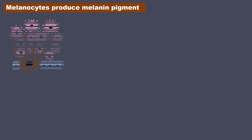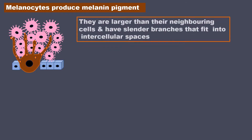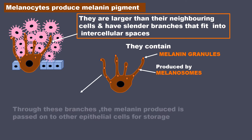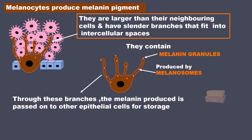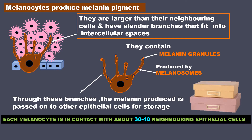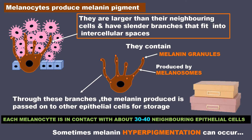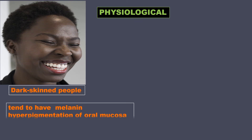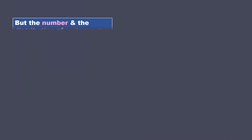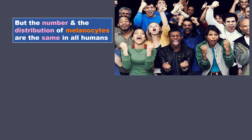Melanocytes produce melanin pigment. They are larger than their neighboring cells and have slender branches that fit into the intracellular spaces. They contain melanin granules produced by melanosomes. Through these branches, the melanin produced is passed on to other epithelial cells for storage. Each melanocyte is in contact with about 30-40 neighboring epithelial cells. So sometimes melanin hyperpigmentation can occur, and this can be physiological. Dark-skinned people tend to have melanin hyperpigmentation of oral mucosa as compared to light-skinned people. However, the number and distribution of melanocytes are the same in all humans.